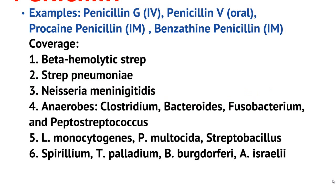The coverage for penicillin includes beta-hemolytic strep, strep pneumonia, Neisseria meningitidis, anaerobes such as Clostridium, Bacteroides, Fusobacterium, and Peptostreptococcus, usually seen in the oral flora or GI tract, Listeria monocytogenes, and Streptobacillus. Also covered are Treponema pallidum, Borrelia burgdorferi, and Actinomyces israelii.